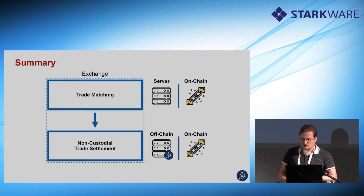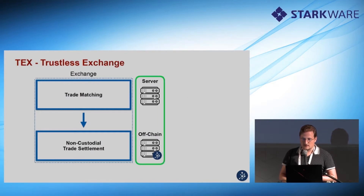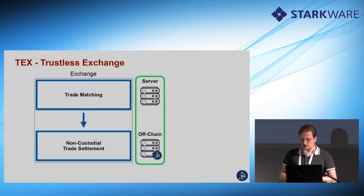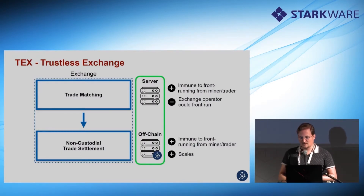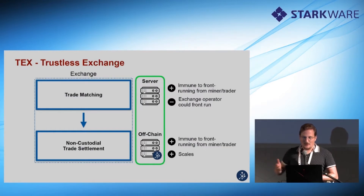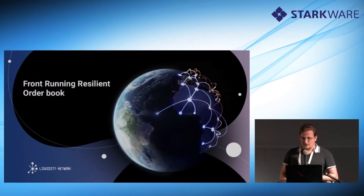For our exchange — TEX, the trustless exchange — we settled on this architecture: a server that maintains an order book and an off-chain trade settlement protocol. For the server exchange trade matching system, it's good because we're immune to front running from miners and traders. However, the server itself can front run our orders. So we will now talk about the front running resilient order book.